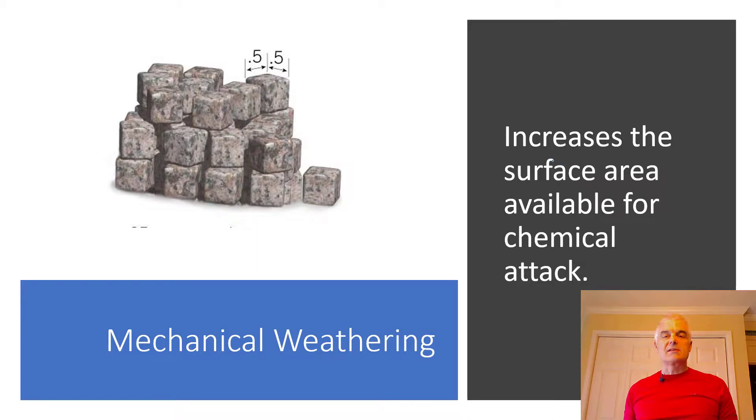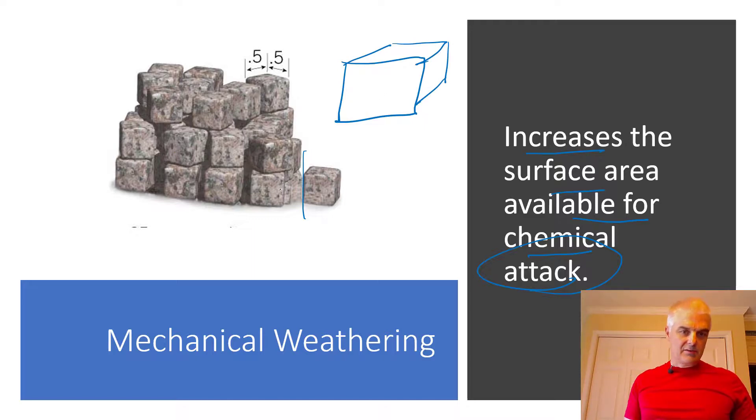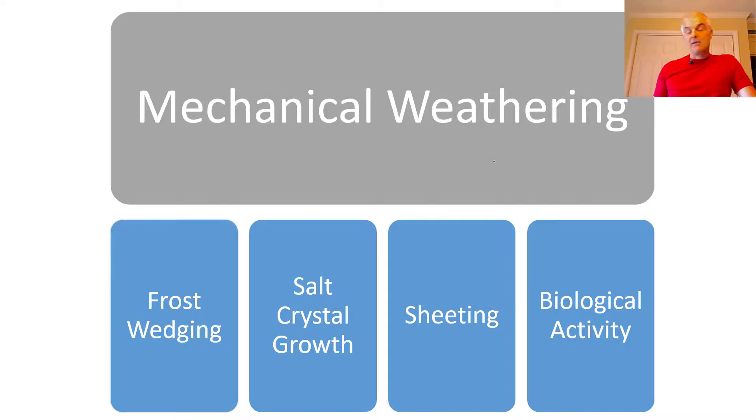So mechanical weathering increases the surface area available for chemical attack. If you can make it smaller, you're increasing the surface area by breaking it down. If I've got a big block of stone and I cut it up into smaller pieces, the actual area that can now be exposed to the outside world is greater. So when we talk about this, if you break it into smaller pieces, you have more surface area. Mechanical is breaking it down into smaller pieces.